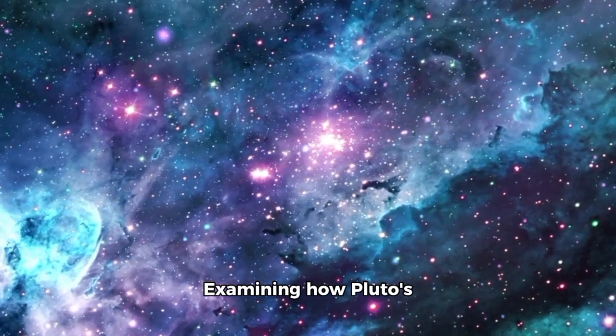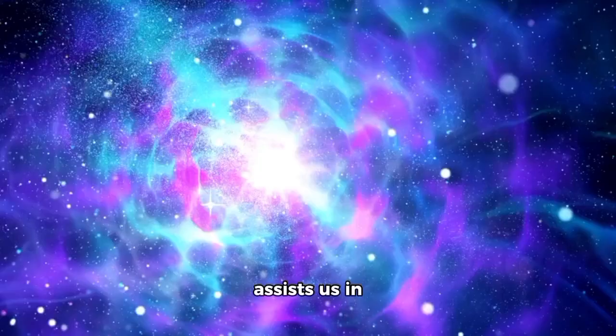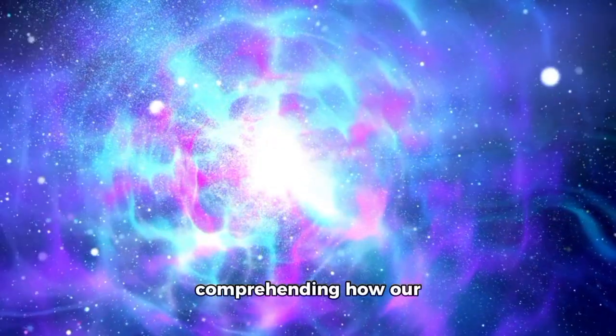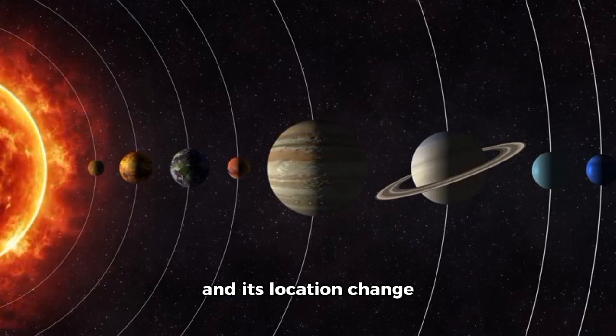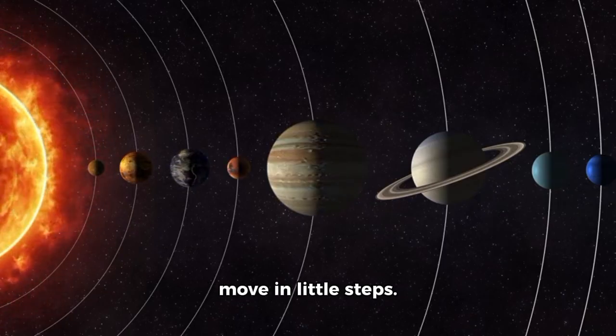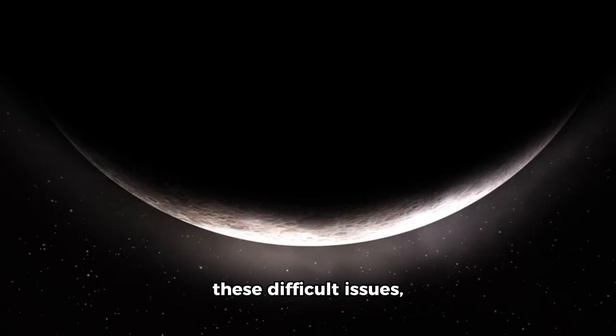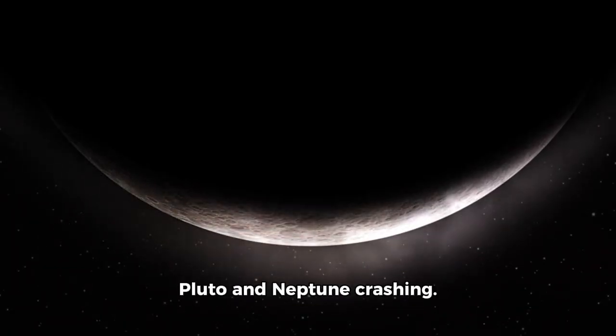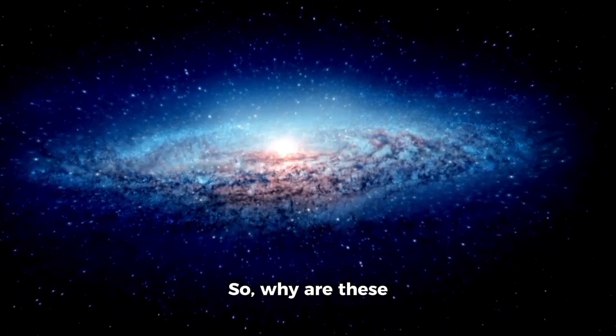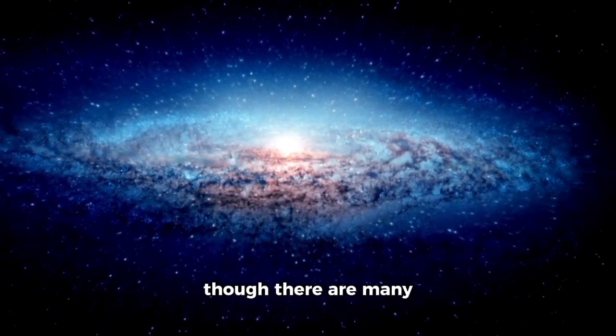Examining how Pluto's orbit is influenced by the big gas planets assists us in comprehending how our solar system functions generally. The size of each planet and its location change how the other planets move in little steps. However, even with all these difficult issues, some scientists still express concern about Pluto and Neptune crashing. So, why are these worries getting attention now, even though there are many factors keeping the two apart?